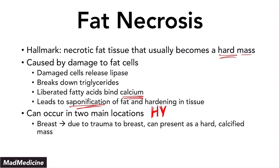This is going to happen in two main high-yield locations. Number one is the breast. When breast tissue gets damaged due to trauma, it can present as a hard calcified mass. For example, if a female gets injured in a car accident and has a seat belt across her chest, that seat belt can cause trauma to the breast — even without visible skin damage. The damaged fat cells release lipase, leading to saponification downstream, and she will present with a hard mass in the breast. This can be mistaken for breast cancer, so you need to rule out fat necrosis.